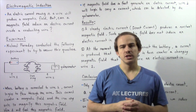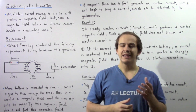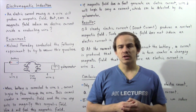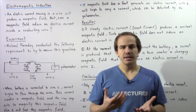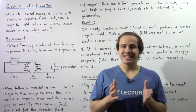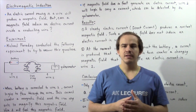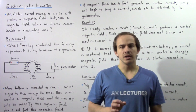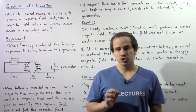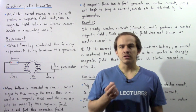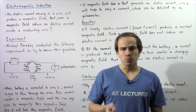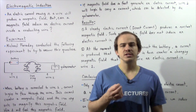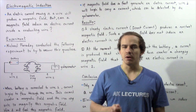In our discussion on the relationship between electricity and magnetism, we discussed two types of laws: Ampere's Law and Biot-Savart's Law. These laws essentially describe the magnetic field that is produced as a result of an electric current moving inside a conducting wire. Whenever an electric current moves inside a conducting wire, it produces a magnetic field around that wire whose direction is given by right-hand rule number one.